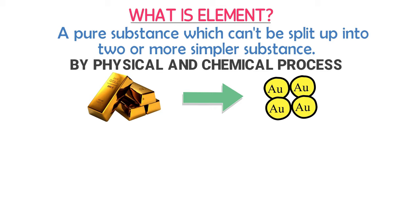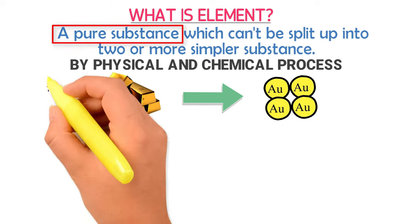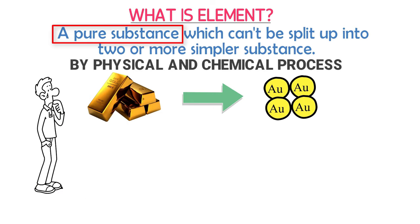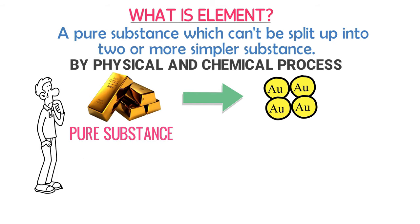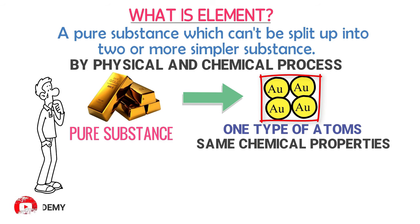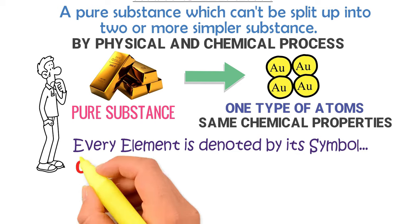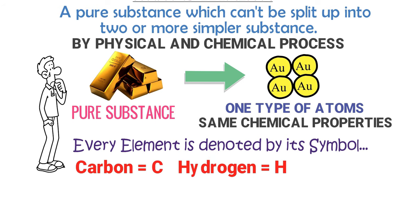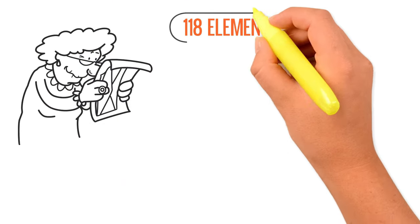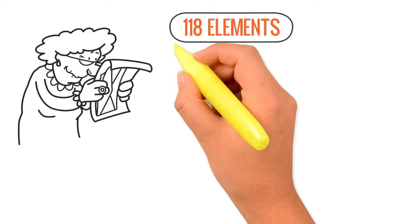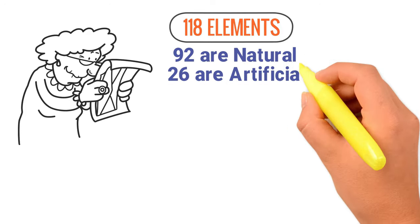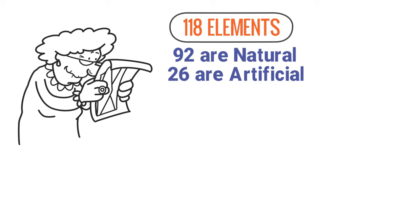Secondly, in the definition, we say that an element is a pure substance — which many students neither know nor try to learn. An element is known as a pure substance because it is made from one kind of atom, and all these atoms have the same chemical properties. Remember that every element is denoted by its own symbol. For example, carbon is denoted by C, hydrogen by H, and oxygen by O. Scientists have discovered 118 elements, out of which 92 are natural and 26 are artificial or man-made.